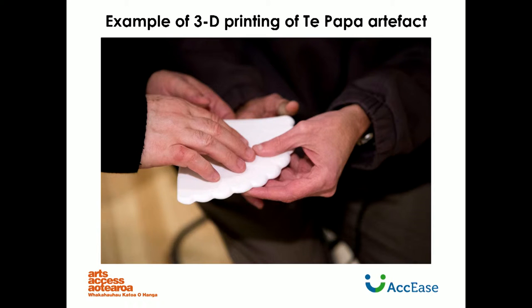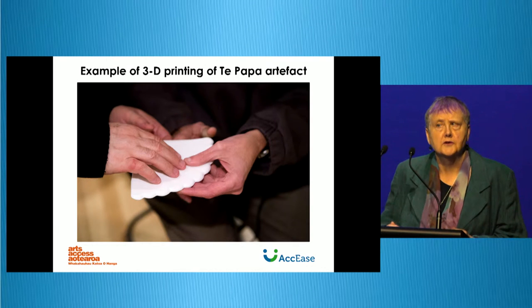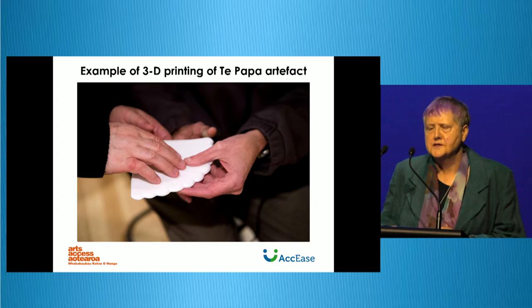Captioning and audio description — audio description does for blind people what captioning does for deaf people. It gives you the visual things that you need to know to hold the story together. This next example is of a tour we did last year at Te Papa, where 3D printing was used to replicate one of the items we were there to see. It was a fire screen and it was a beautiful shape — like many things in museums, it just asked to be touched. So with a bit of 3D printing, we could actually feel the shape of it as we talked about the item.